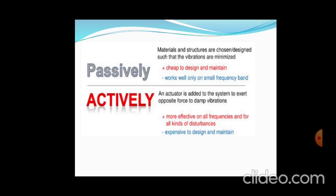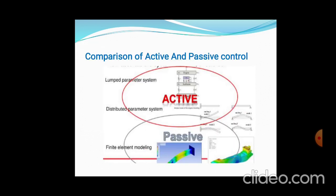Comparing passive and active control: passive control is cheap to design and maintain but works well only at small frequencies. In active control, actuators are added to the system to exert an opposite force against the vibrations. Active control is more effective across all frequencies and all kinds of distances, but is more expensive to design and maintain. We also distinguish between lumped parametric systems and distributed parameter systems.